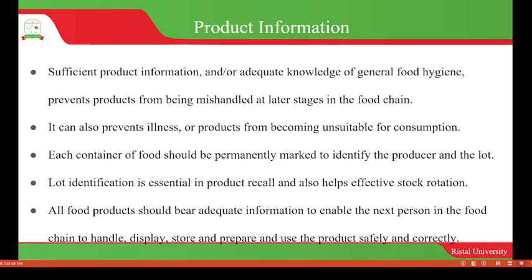The other area covered by good hygienic practices is product information. Sufficient product information or adequate knowledge of the general food hygiene prevents products from being mishandled at later stages in the food chain, because those involved in the later stages will use that information for processing or handling that particular food product. This prevents illness among consumers and prevents products from becoming unsuitable for consumption.